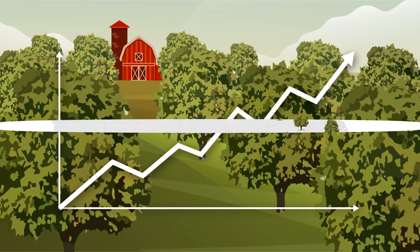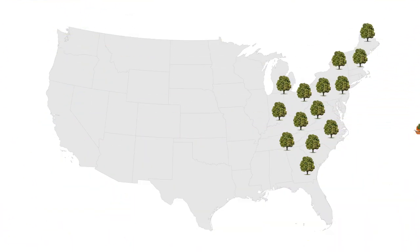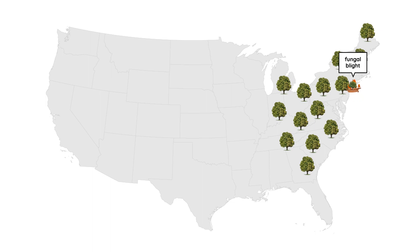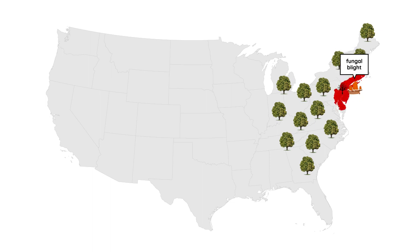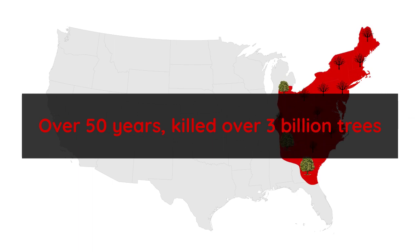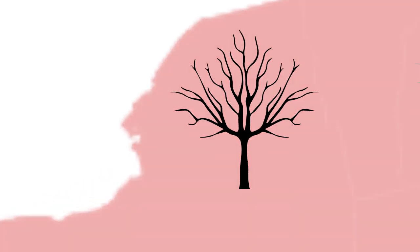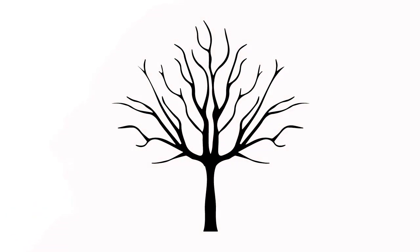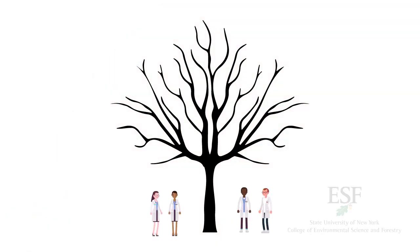Then in the late 1800s, a fungal blight entered the US through the port of New York on imported Asian chestnut trees. Over the next 50 years, it killed over 3 billion American chestnut trees and significantly changed the lives of people and wildlife. After a century of unsuccessful attempts to fight the blight, researchers from the American Chestnut Research and Restoration Project discovered a simple solution with the help of biotechnology.